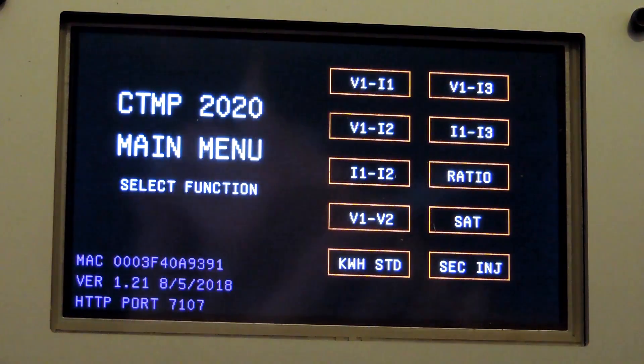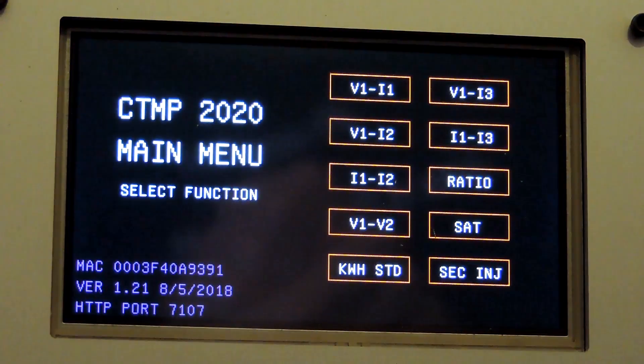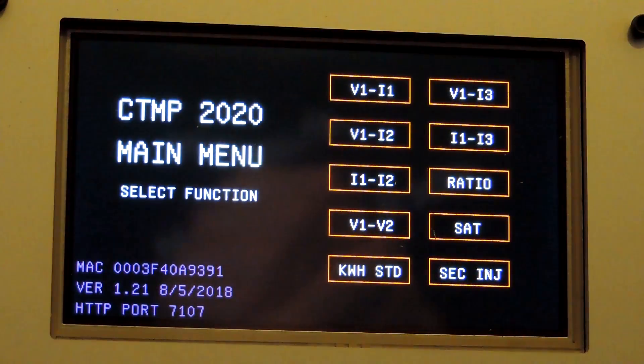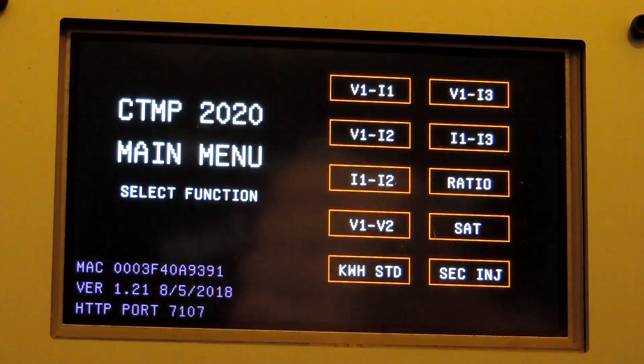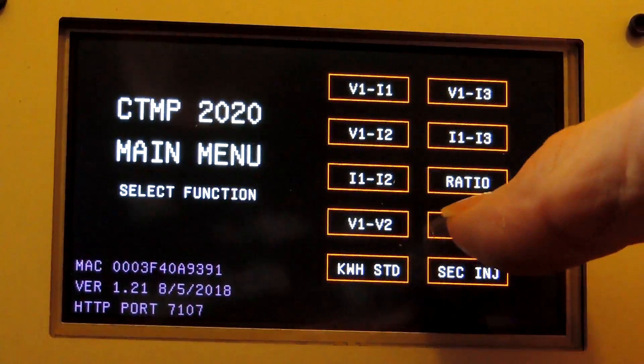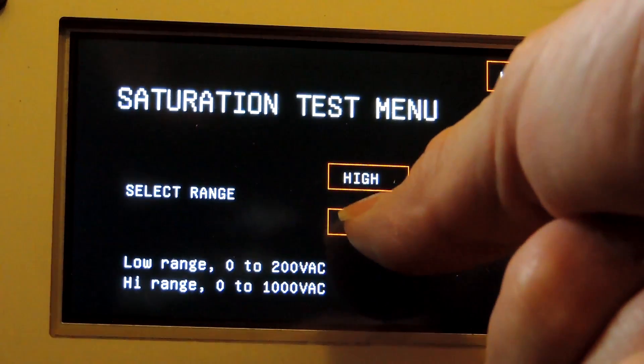Okay, we're starting from the main menu. This will be a multi-tap saturation test. If you would like to see the connection of the CT, that is in the ratio video and the ratio section of the instruction manual. So I'm going to press saturate low range.